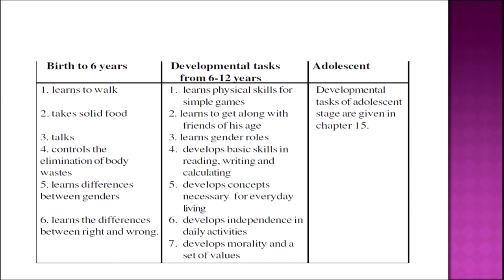Developmental tasks at different stages can be seen as follows. For example, from birth to six years, the child learns to walk, starts taking solid food, talks, and is comfortable with the elimination of waste from the body. The developmental task from six to twelve years differs — it includes learning play skills for particular gains, learning to get along with friends of the same age, and learning gender roles. The developmental tasks and expectations of adolescents are entirely different from the previous two stages.